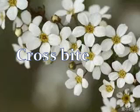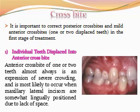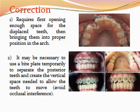It is important to correct posterior crossbite and mild anterior crossbite in the first stage of treatment. Individual teeth displaced into anterior crossbite may be due to lack of space. Correction requires first opening enough space for the displaced teeth, then it is necessary to use a bite plate to separate the posterior teeth and create the vertical space needed to allow the teeth to move.